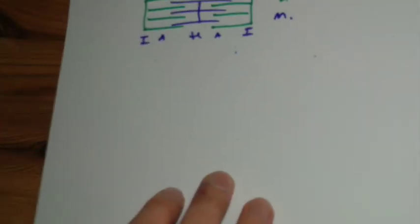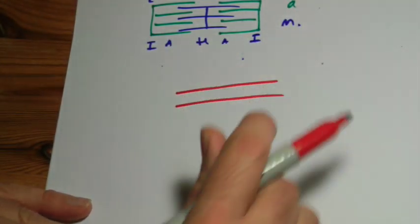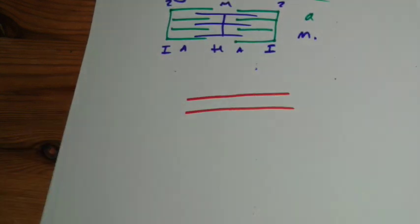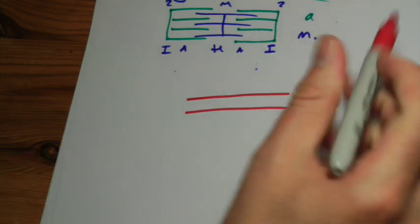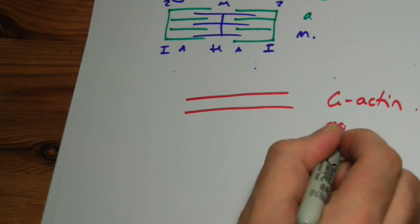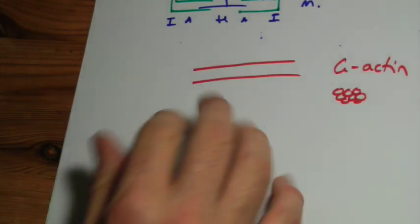So if we were to take a single strand of actin, so we've zoomed in on one of these actin strands, I've changed the color now but not to worry. It's actually made of three different things. The first thing is called G-actin. It's actually, if you look in your books you'll see it's made of protein and molecules. I've just drawn it as a single band. It's not important to us.